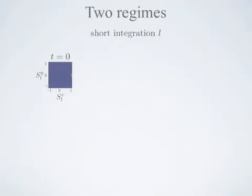In our paper, we obtain the analytical expression of the joint distributions during dynamics, and we observe two distinct behaviors depending on the integration length L.